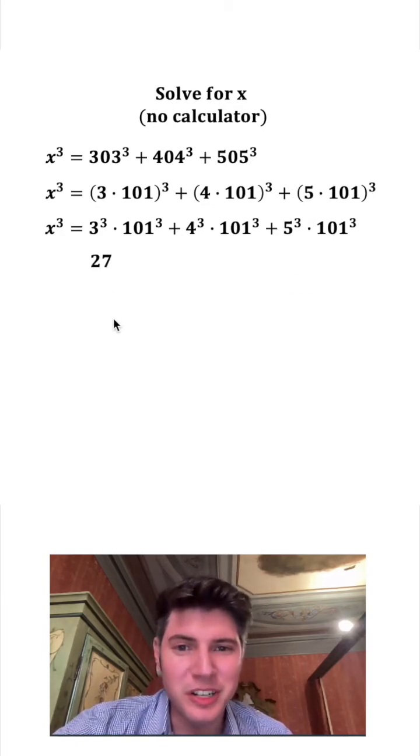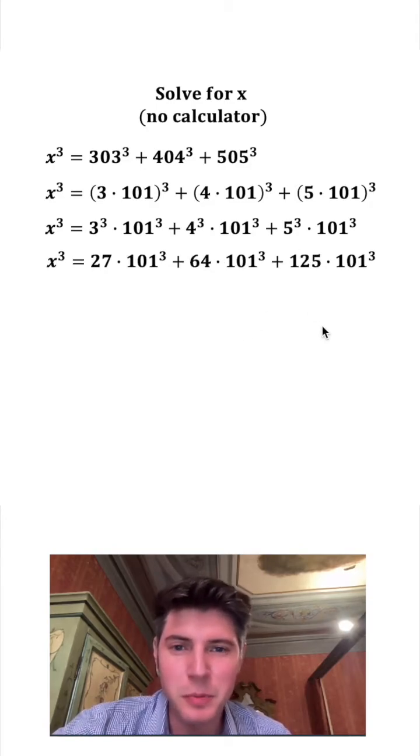3 cubed is equal to 27, 4 cubed is equal to 64, and 5 cubed is equal to 125. Now let's bring down everything else.